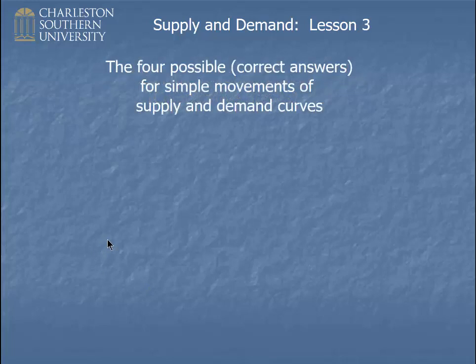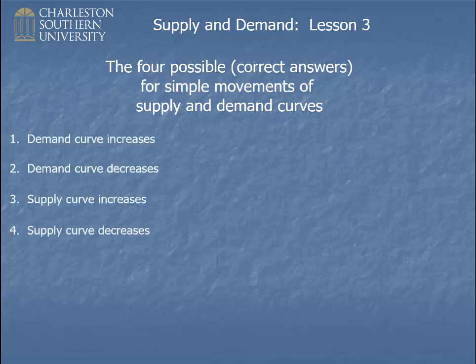There are really four possible correct answers for simple movements of supply and demand curves, and for test purposes, 99 percent of the questions you would ever see are about simple movements of supply and demand. So there is a demand curve increase, a demand curve decrease, a supply curve increase, and a supply curve decrease — and that's it.